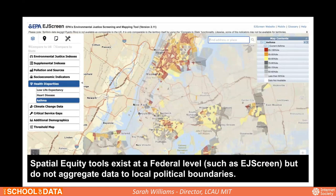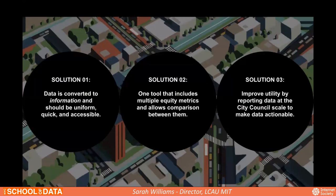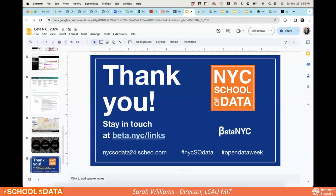There are a lot of equity tools that exist. One great example is EJ Screen, which has many equity indicators but releases them at the census tract level, not at aggregated political boundary levels. What we were trying to differentiate with this tool is making it easier for people working at community boards. The solution is data converted into information: multiple equity metrics reported at the city council level. I'll turn it over to Hannah for a quick demo.